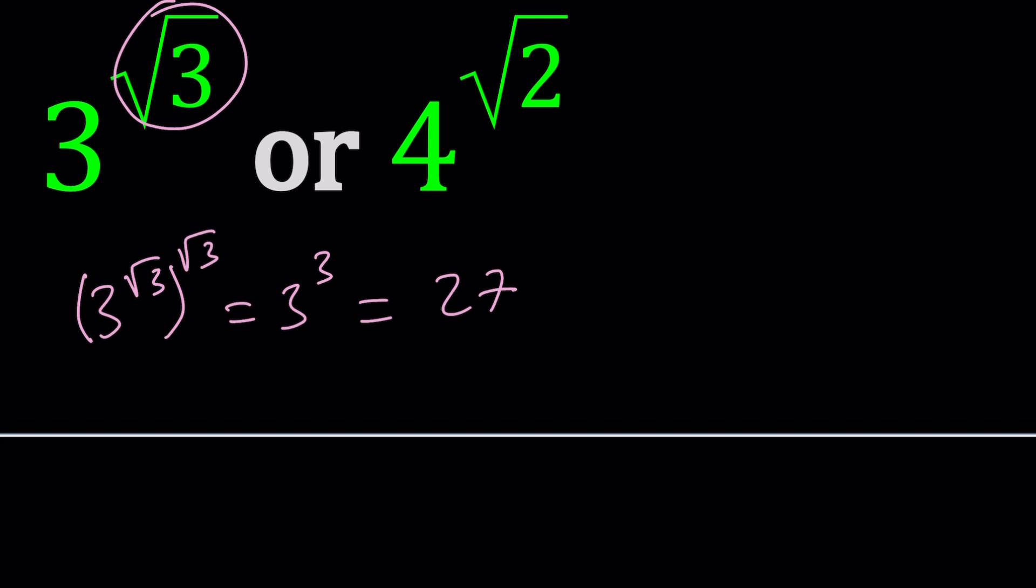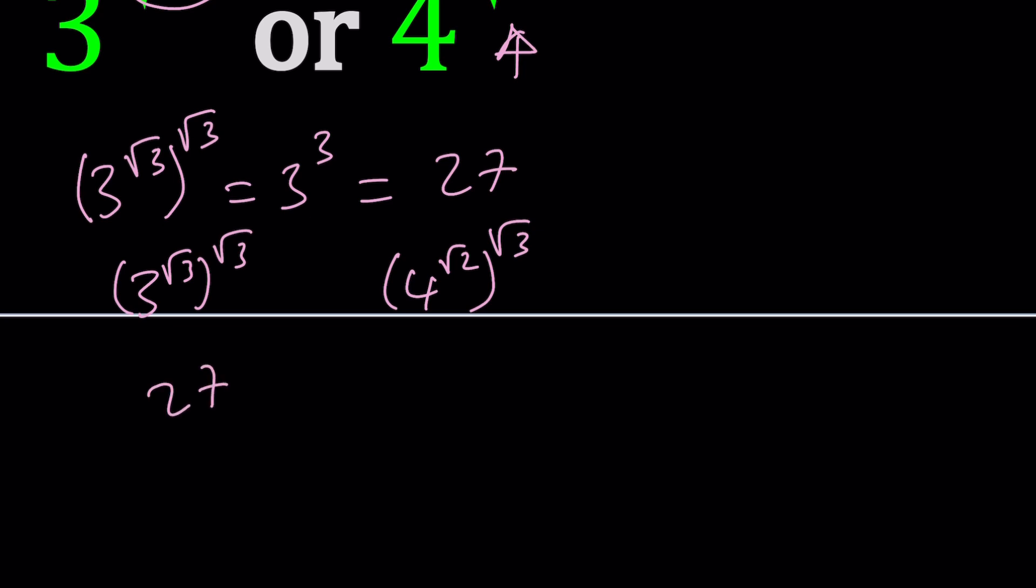So what does that mean though? You can't just raise one of these to the power root 3. You must do it on both. So when you do it on the right hand side, then you get the following. Now you have 27 and 4 to the power root 6. So if there's a way to be able to compare these two numbers, then you could go ahead and proceed with that.